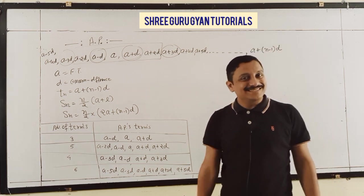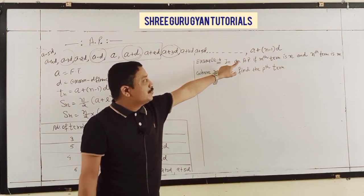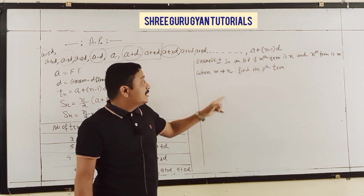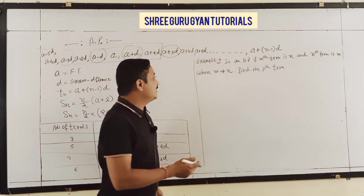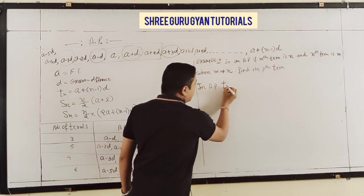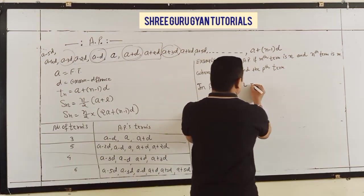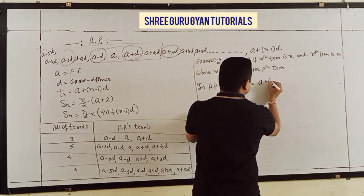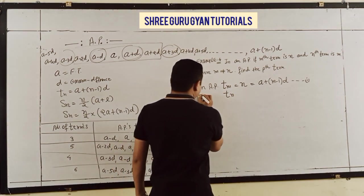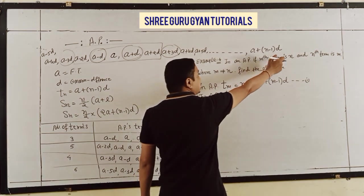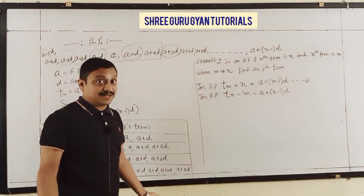Now Example 4, which is IMP. In a given AP, the Mth term is N and the Nth term is M. Find the Pth term. In AP, Mth term = A + (M-1)D = N ... (1). And Nth term = A + (N-1)D = M ... (2).